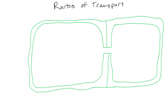These are parts of the plant cell, just looking at the cellular level. On the outside here, we have the cell wall. On the inside, we have the cytoplasm or cytosol, which is the fluid part of the cell. The cell wall is the structural part of the cell.